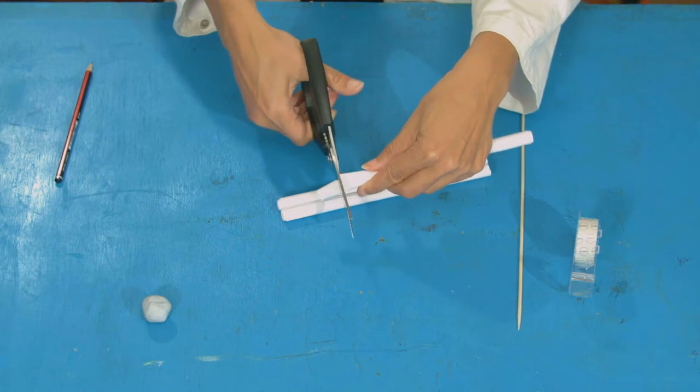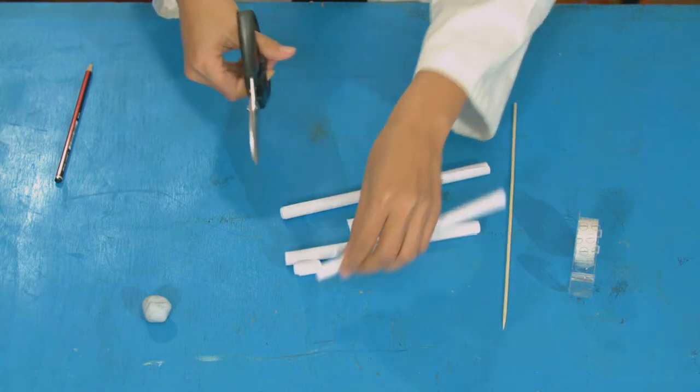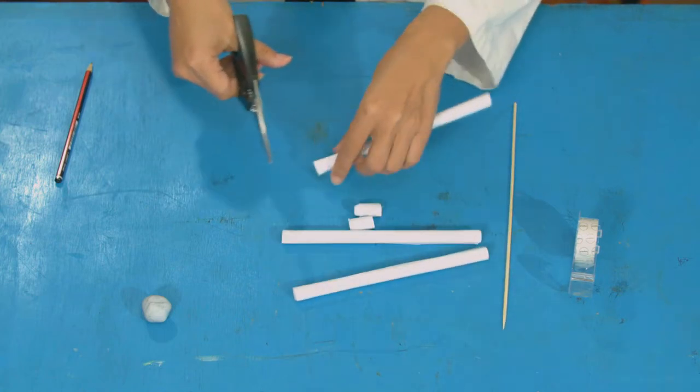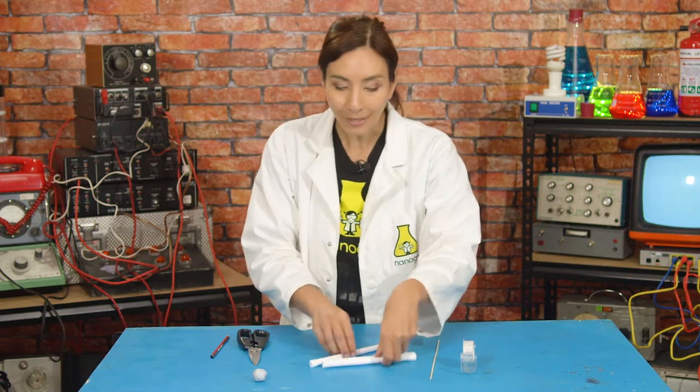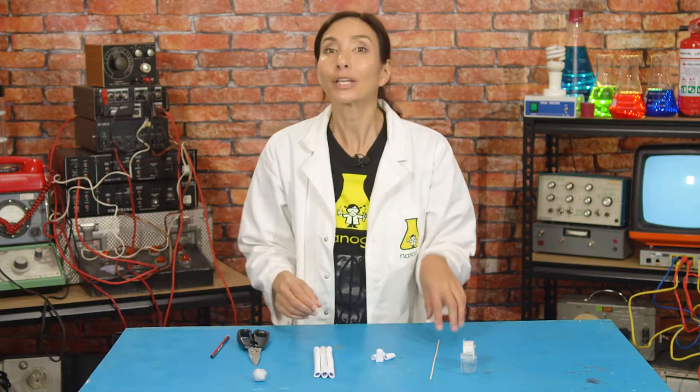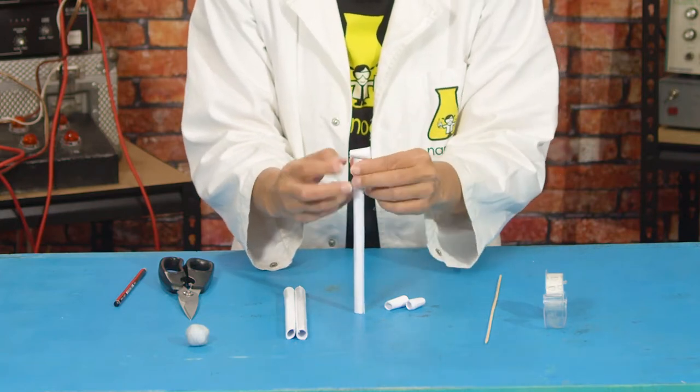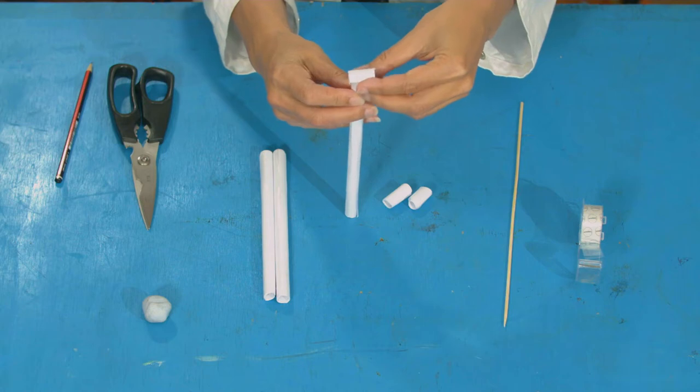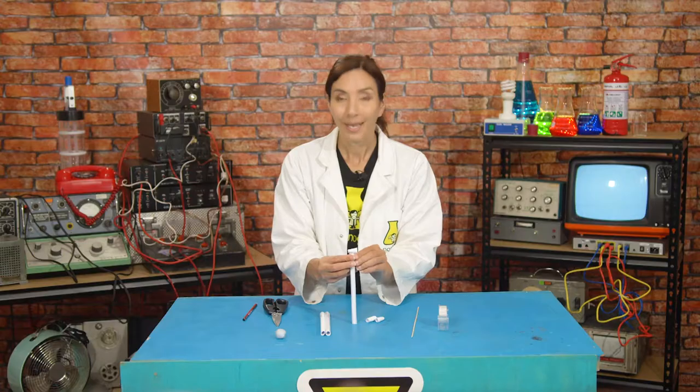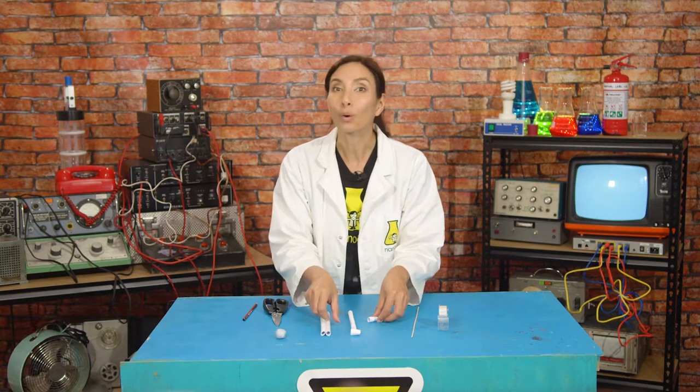You're going to cut a small section off one end of each straw about two centimeters off the end. So we've got three short ends and three long ends. Now you're going to tape the short sections onto the straw at right angles to the long one to make a little t-shape and these are going to be your rod.